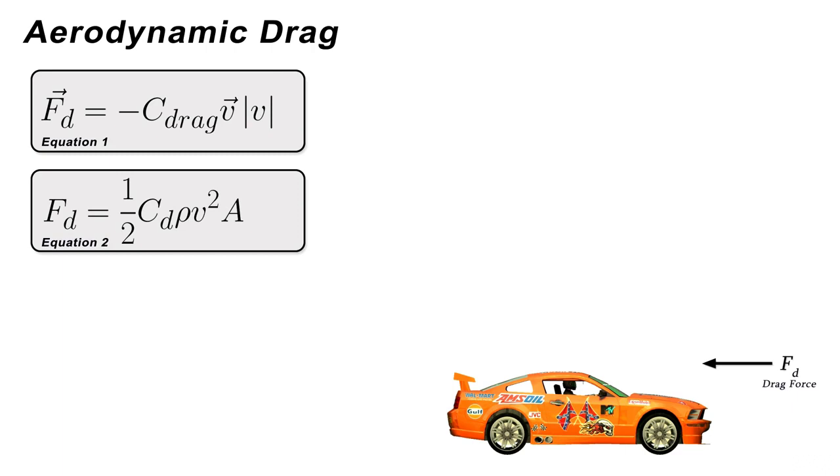The most popular formula for approximating the magnitude of aerodynamic drag is shown in equation 2. You may have come across this in many physics books and papers. It might look a little scary to the uninitiated, but it's actually pretty simple once we understand what all those symbols represent.